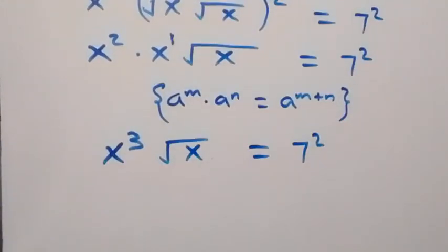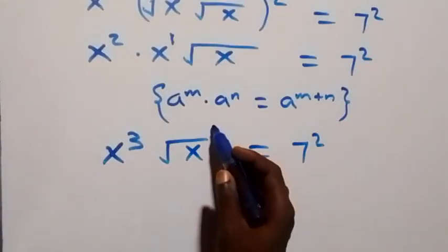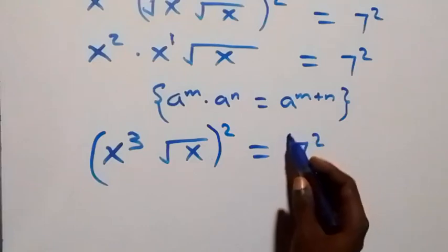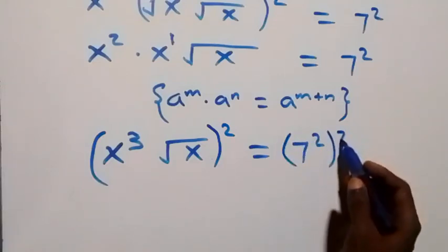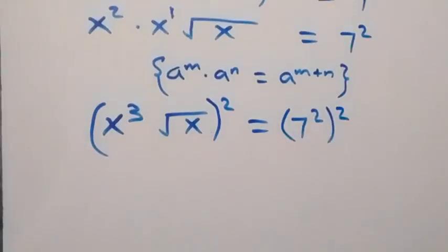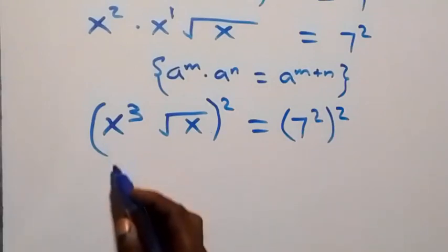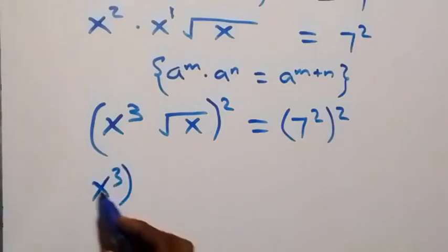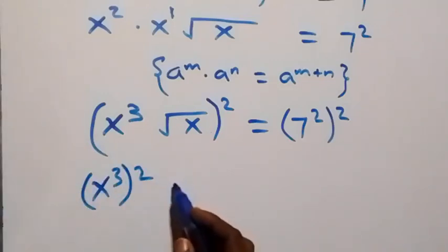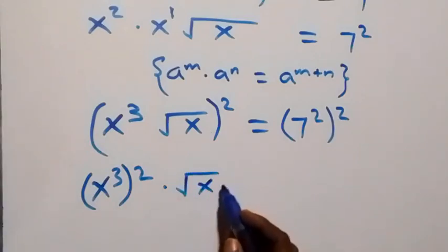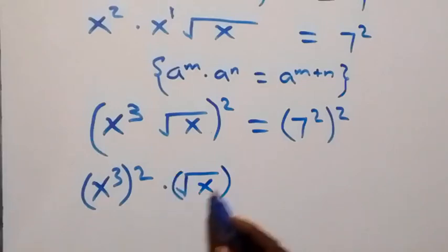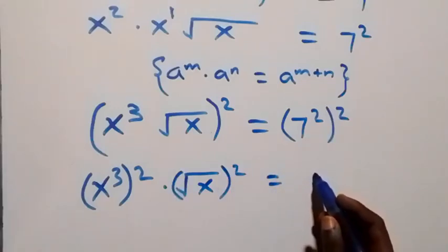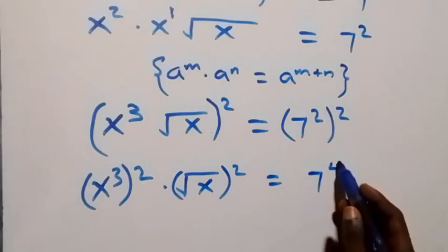The next step: we can take the square on both sides again. We square this side and also we square this side. That is, the square here affects x raised to power three — we have x raised to power three squared — then times root x squared equals to, on the right side this power multiplies, we have seven raised to power four.